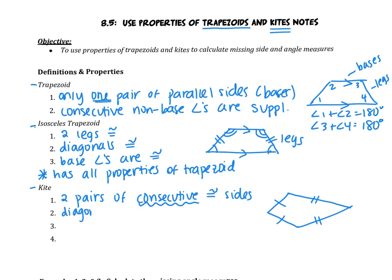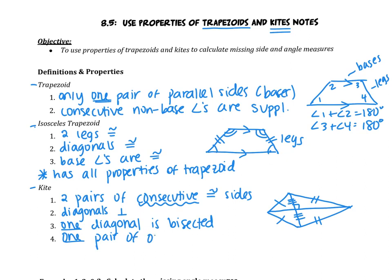Next, we know that the diagonals of a kite are perpendicular. We also know that one diagonal is bisected — you can see in the figure that one diagonal looks like it's bisected. And lastly, one pair of opposite angles are congruent. It's the angles that are connected by that bisected diagonal. So in this case, this angle is congruent to the one across from it. The other pair of opposite angles are not congruent.